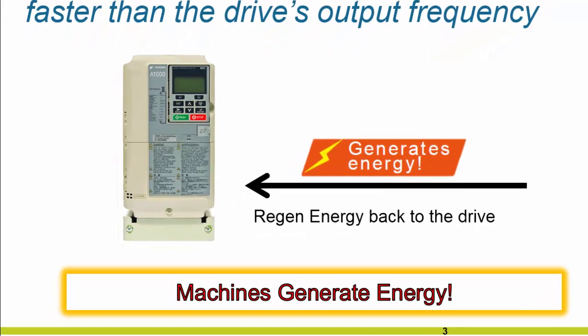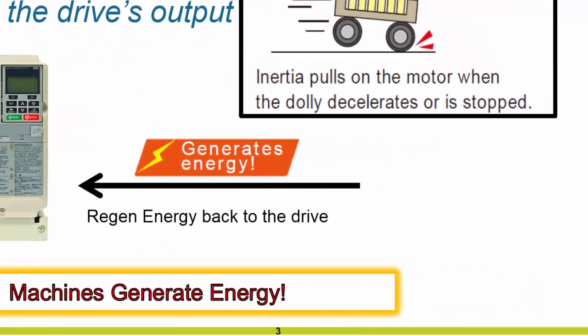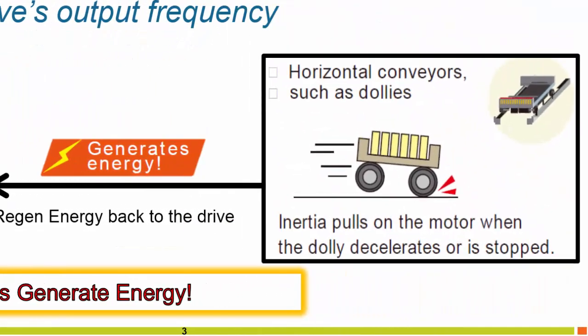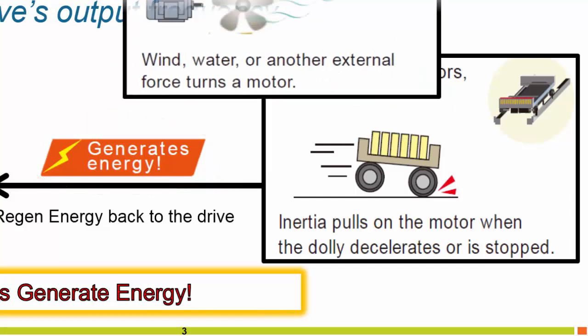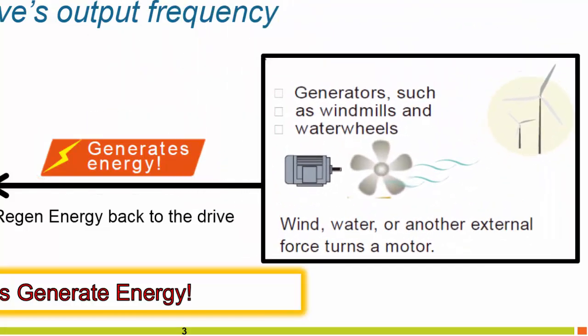For example, conveyors, or applications with high-inertial loads. When we slow this down or we stop that load, it regenerates energy. Even variable torque loads, such as fans or pumps, can have external forces turning the motor resulting in regenerative energy.